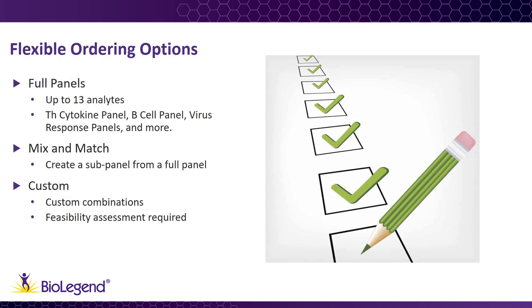An additional benefit to LegendPlex is that it offers flexible ordering options to get the most out of your research dollar. Full panels are predefined groups of target analytes related to a specific research field, including our T-helper cell cytokine panels, B-cell panels, and growth factor panels. Full panels are typically sold as 13-Plex assays. We also offer mix-and-match options for researchers interested in creating an assay from a subgroup of analytes within our full panels. For example, you might be interested in only six of the 13 targets in the T-helper cell cytokine panel — with mix-and-match, you can order an assay that includes beads for only the six targets you choose.